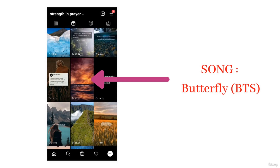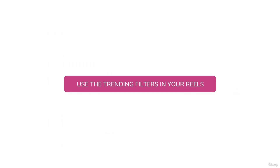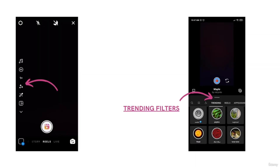My advice is to find the trending audio and use it in your Instagram Reels — I've shown you how to find it: just check for the arrows next to the audio. The second trending feature you should use in your Instagram Reels is trending filters. To find the trending filters that people use on their Instagram Reels, open the Reels section on your Instagram app.